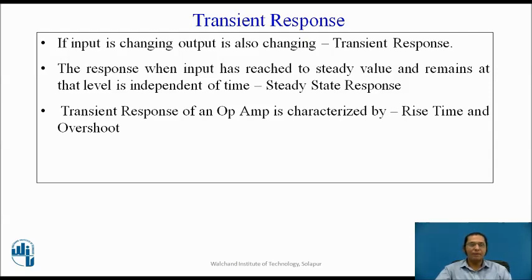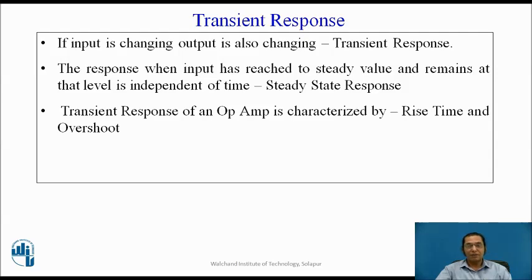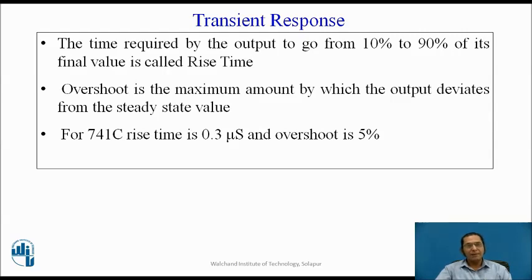Let us have a look at a few AC characteristics of the op-amp. The first AC characteristic is called the transient response. For any amplifier, if the input is changing, the output is also changing, and the measurement of that is called the transient response. The response when the input has reached a steady state value and remains at that level is called the steady state response. The transient response of an op-amp is characterized by two factors: rise time and overshoot. Rise time is the time required by the output to go from 10% to 90% of its final value. Overshoot is the maximum amount by which the output deviates from its steady state value, measured as a percentage. For 741C, rise time is 0.3 microseconds and overshoot is about 5%.